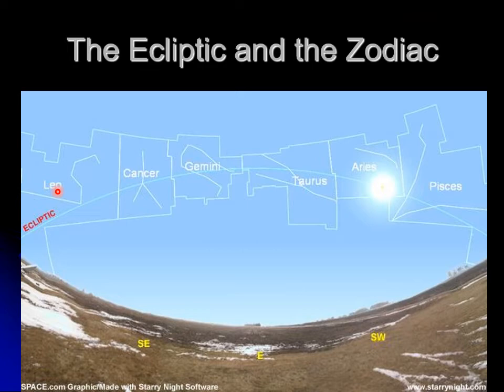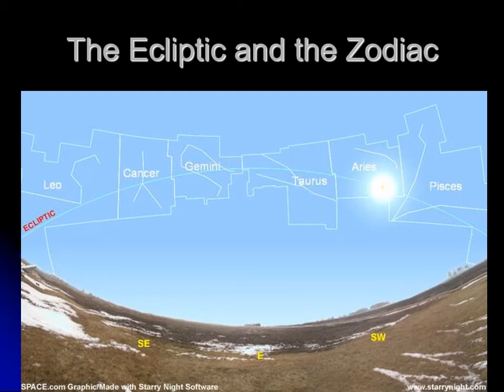I'll explain why I say 12 or 13 in a bit. The zodiacal constellations — Leo, Cancer, Gemini, Taurus, Aries, Pisces, etc. — are the constellations the sun appears to pass through. They're marked on your star chart lab as a little dashed line that runs across all the maps, marking the ecliptic. This is also important because Earth and all the planets orbit in roughly a plane, so you see planets along the ecliptic too. The moon also follows close to the ecliptic, so that's where you find a lot of solar system objects.